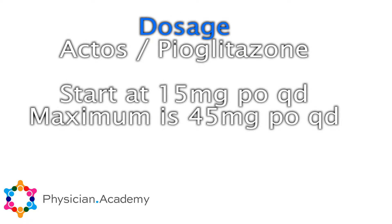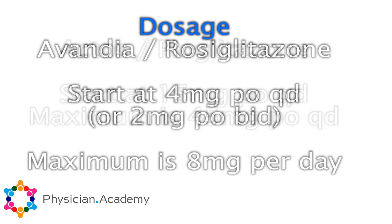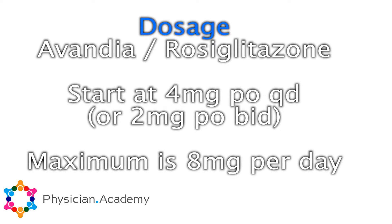The starting dose for Actos or pyoglitazone is usually 15mg daily, with a max dose of 45mg daily. For Avandia or rosiglitazone, you start at 4mg daily or 2mg twice a day, to a max of 8mg daily.